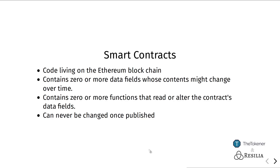It's important to note that a smart contract, once published to the blockchain, can never be altered anymore. While you are able to change what value is stored inside the data fields, you are only allowed to do this using the functions that the current computer code provides. The actual code itself can never be altered anymore. This means that if you've made a mistake in your code, there's no way to fix this later on. This is why smart contract development is very, very difficult to do properly, but also why it is an extremely exciting subject.